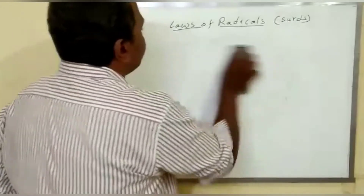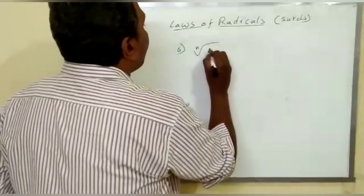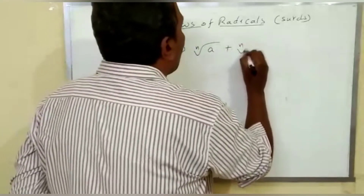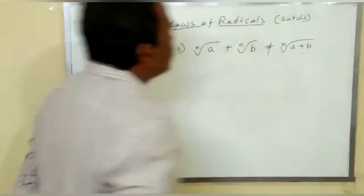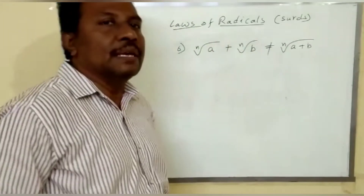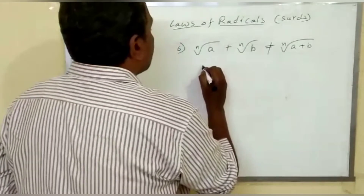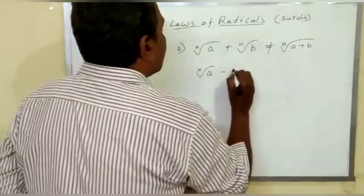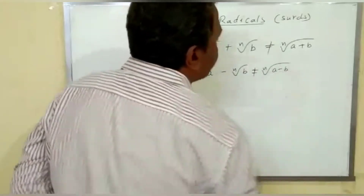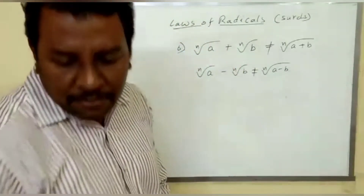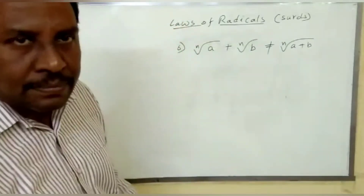Now the sixth law. The nth root of a plus nth root of b is not equal to nth root of a plus b. At the same time, nth root of a minus nth root of b is not equal to nth root of a minus b. We will take some examples to have a clear picture on this law.